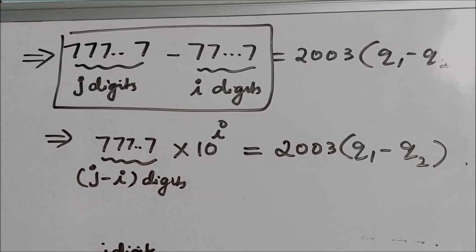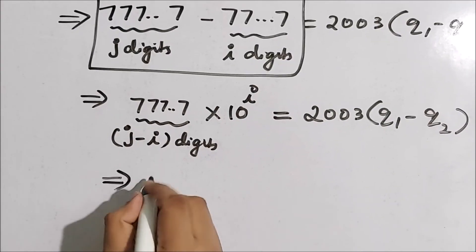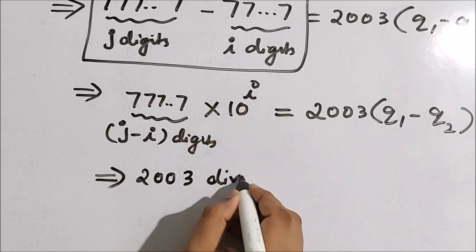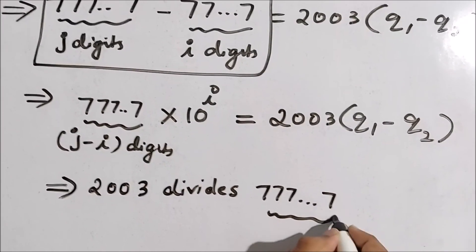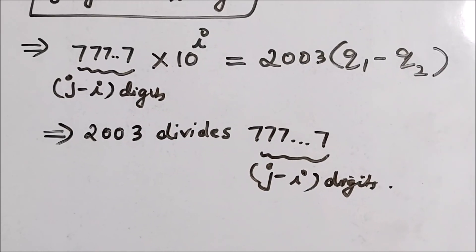So you can see that here 2003 and 10 raised to i, they are relatively prime. Or in fact, we can say that their highest common factor is 1. Which implies that 2003 divides 777...7 with j minus i digits of 7. So this number is a multiple of 2003.